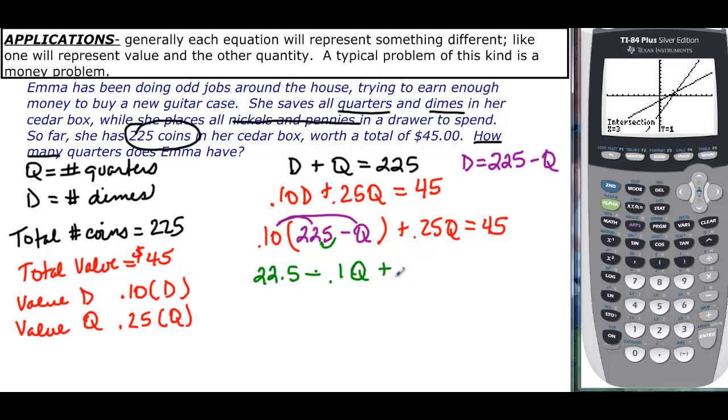If I subtract 22.5, I'm going to combine these two. That will give me positive .15Q equals 22.5. If I divide by .15, I'm going to find that Q equals 150. So go back and see if I've answered the question: how many quarters? That's all they asked me for. So Emma has 150 quarters.